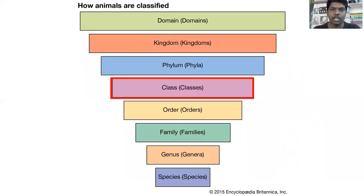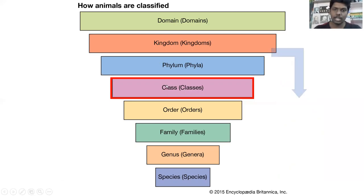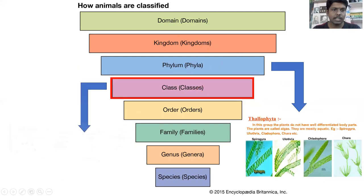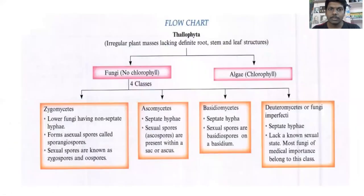In Taxonomical Classification, the fungus is placed under the Phylum Thalophyta. They have four classes: Zygomycota, Basidiomycota, Ascomycota, and Deuteromycota. We discussed the characteristics of these four classes of fungi in Taxonomical Classification.